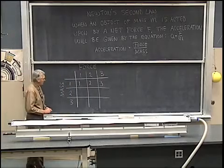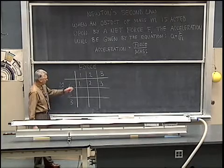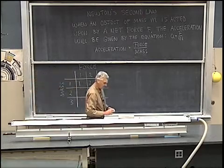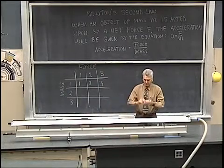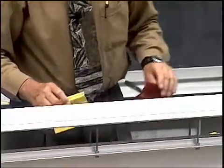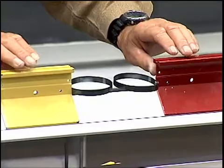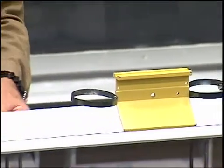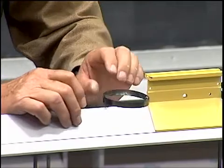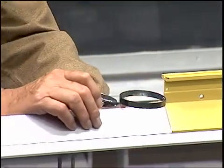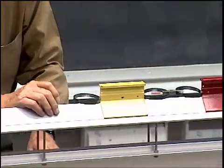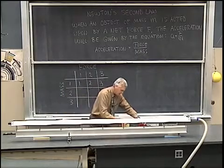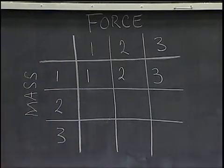Next, what I'd like to do is demonstrate what happens if we keep our original one unit of force and now increase the mass. I'm going to take the original one unit of force, only this time apply it to two units of mass — twice as much mass. So now we have two units of mass coupled together, and we take the original one unit of force and measure the acceleration. We observe the acceleration to now be one half unit of acceleration.